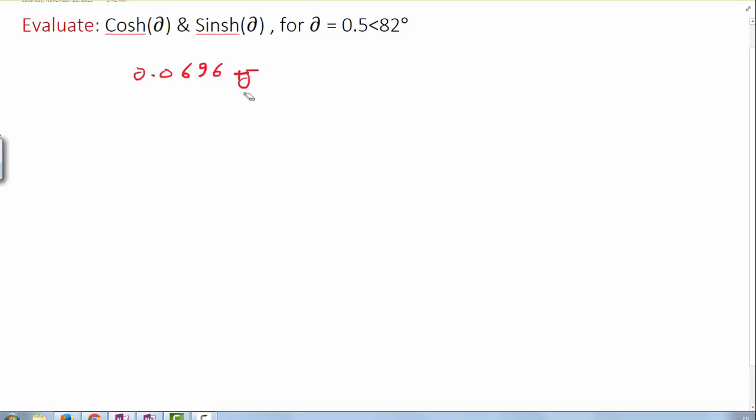It's 0.0696 plus the complex number. A lot of references use j, a lot use i. It does not matter really, you can use j or i. It's 0.4945.